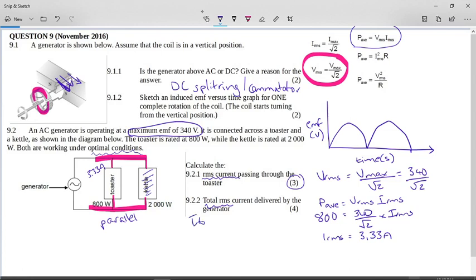Okay, so I_total will be equal to the I_RMS for the toaster plus the I_RMS for the kettle. So we must now actually go and calculate the current for the kettle. So if we look at the kettle...